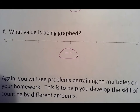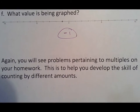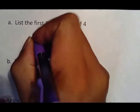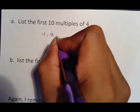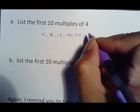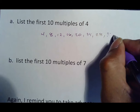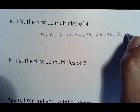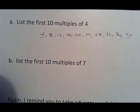You're going to see problems pertaining to multiples on your homework — this helps you with the skill of counting by different amounts. First ten multiples of four: four — and I don't care if you use your fingers — five, six, seven, eight, nine, ten, eleven, twelve through to forty. Your multiples should start at that number and end with that number followed by a zero. So multiples of four go four, eight, twelve, sixteen, twenty, twenty-four, twenty-eight, thirty-two, thirty-six, forty.